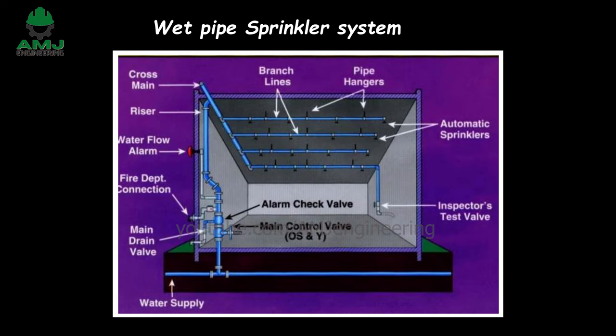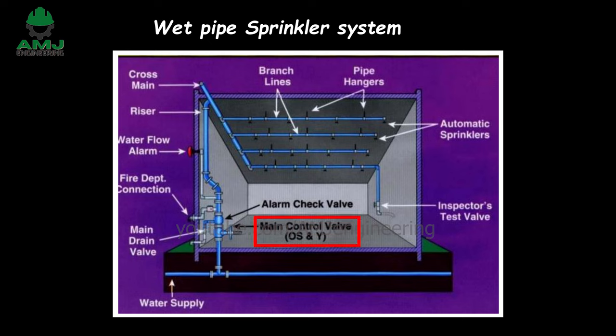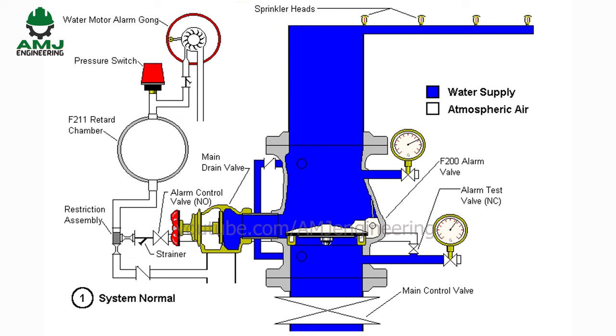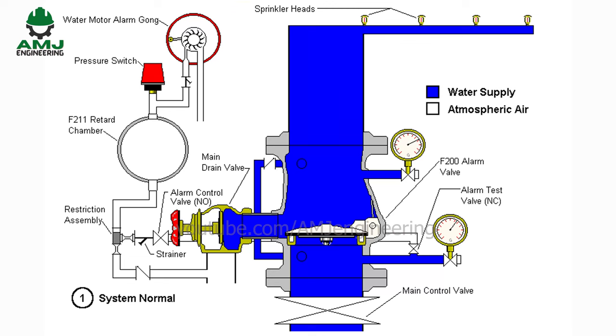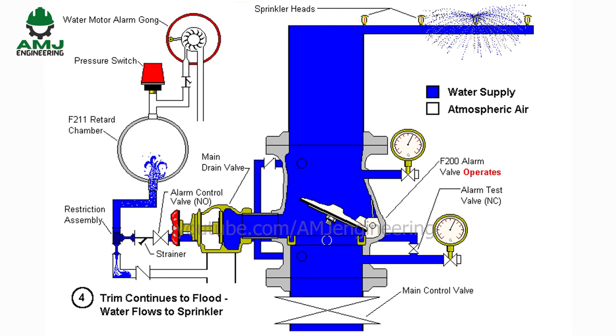Wet pipe sprinkler systems. The components of a wet sprinkler system include, in addition to the water supply, piping, and sprinklers: a backflow prevention device, control valve, main drain, fire department connection, and water flow alarm. Wet pipe sprinkler systems always contain water in the riser and piping. As soon as a sprinkler head activates due to the heat of a fire, water is immediately discharged through the open head.